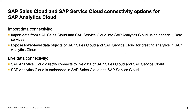I'm going to give you some idea about the connectivity options we have. There are two types of connectivity possible. The first one is the import data connectivity. The other one is live data connectivity. In import data connectivity, when we connect from SAP Analytics Cloud and get the data from SAP Sales and Service Cloud, the data will be fetched through OData services.